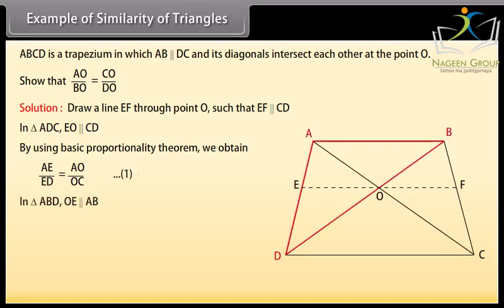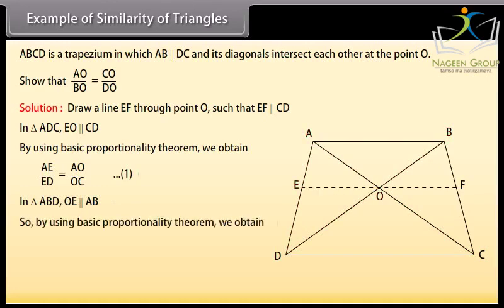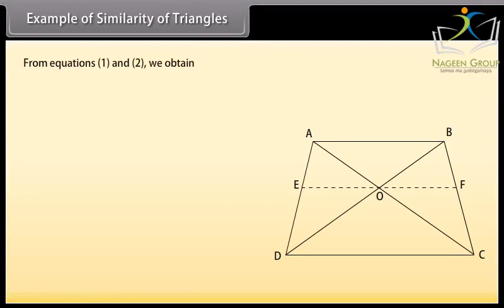In triangle ABD, OE is parallel to AB. By using the basic proportionality theorem, we obtain ED upon AE equals OD upon BO, which implies AE upon ED equals BO upon OD — mark it as equation 2. From equations 1 and 2, we obtain AO upon OC equals BO upon OD, which implies AO upon BO equals OC upon OD.